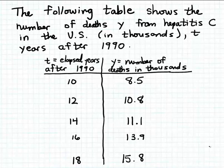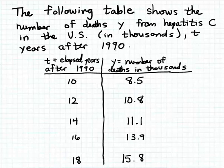Recall from one of our previous problems that the table shown here shows the number of deaths from Hepatitis C in the United States, in thousands. We're going to call that value Y, so those numbers are listed in the second column of the table. T represents elapsed years after 1990, and those values are listed in the first column of the table.